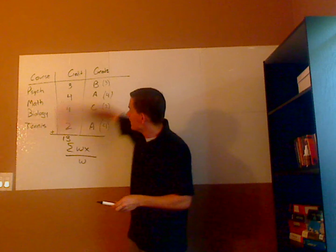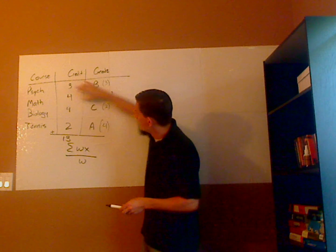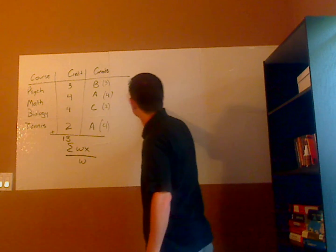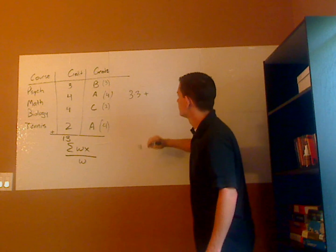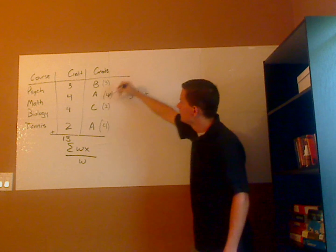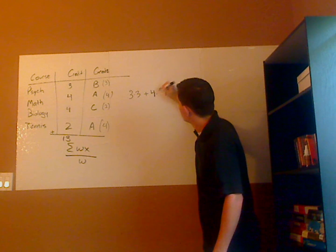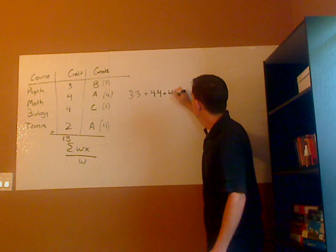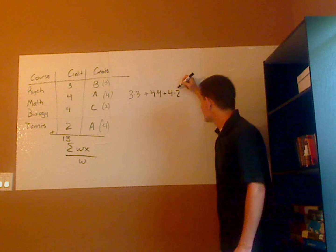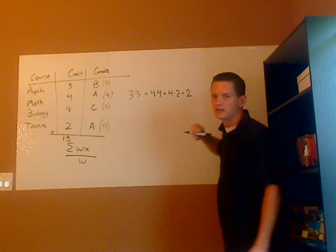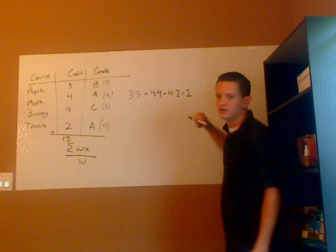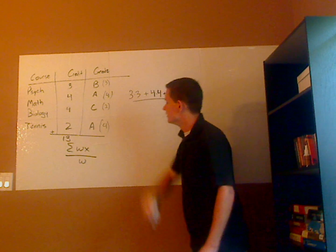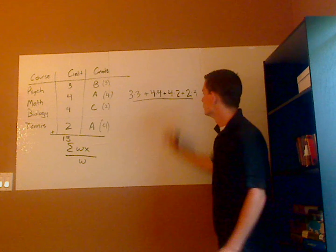Now to calculate, you multiply the weight times the value for each course and then add all those up and divide by the total weight. So it's three times three, plus the weight times the grade for math — four times four — then for biology the weight times the points, four times two. And then same thing with tennis: the weight is two because it's the credits, and the points would be four. Then you take that and divide it by the total weight, which is thirteen.